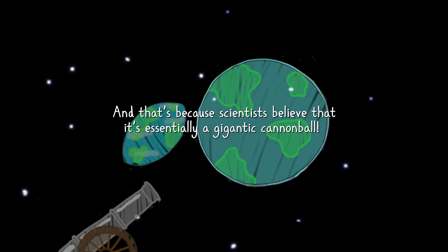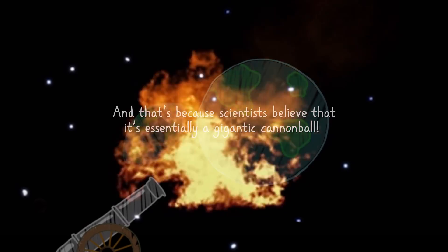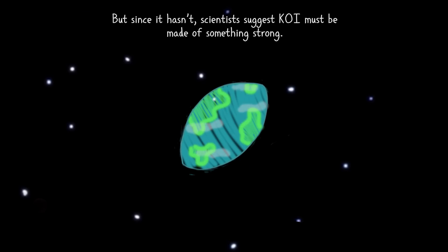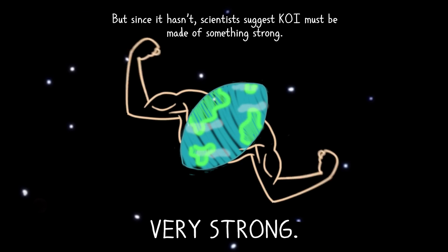And that's because scientists believe that it's essentially a gigantic cannonball. Now, typically, weaker planets of its size orbiting so close should break up and be destroyed due to the gravitational forces acting on it from its host star. But since it hasn't, scientists suggest KOI must be made of something strong. Very strong.